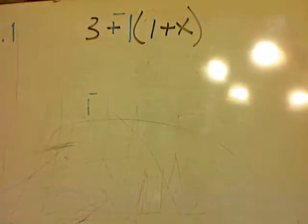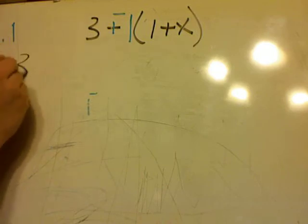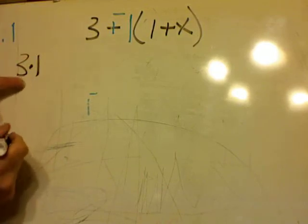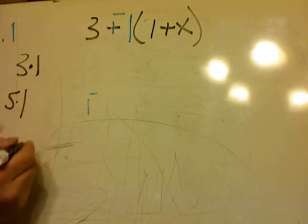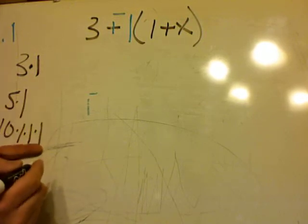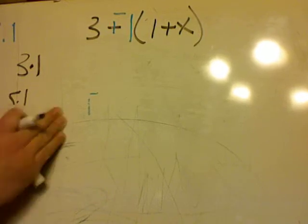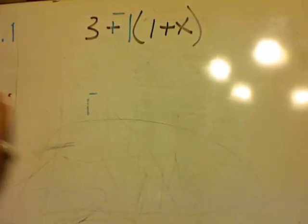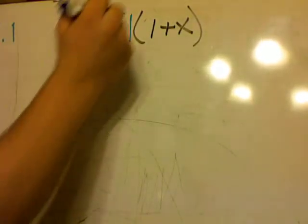Then do my sign change. Remember, we can put a 1 anywhere. Right? If I take 3 times 1, it's still a 3. If I take 5 times 1, it's still a 5. If I take 10 times 1 times 1 times 1, it's still a 10. Put as many 1s anywhere I want. As many 1s as I need anywhere I want.